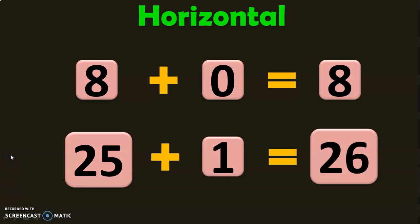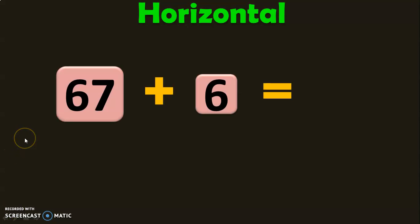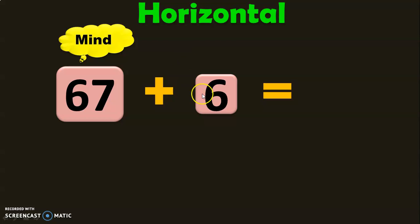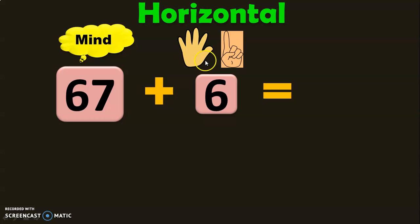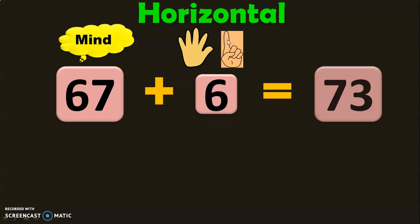Let us do two more examples. The numbers we have here are 67 plus 6. Have 67 in the mind and 6 in your fingers. To keep 6 in the fingers, keep 5 fingers in one hand and one finger in the other hand. So 67 plus 6: after 67, it is 68, 69, 70, 71, 72, 73. So the answer is 73.